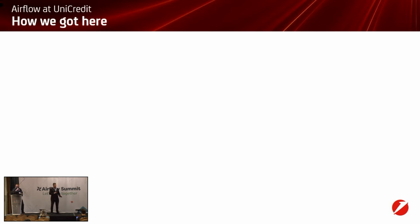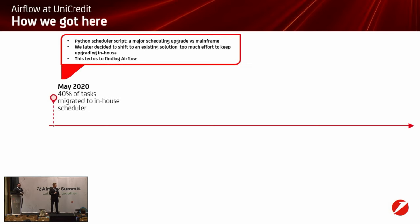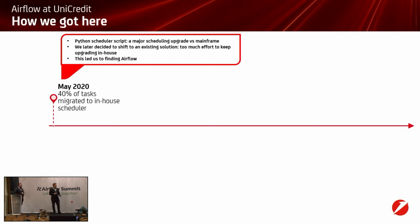We ended up moving to Airflow, and this slide presents a timeline of how we got here. The journey started in May 2020 with the deployment of a scheduler script that we created in-house in Python. This was not Airflow — something we had created ourselves. This generated a massive upgrade in terms of all the issues we had originally with the mainframe scheduler. The configuration was stored as code owned by our own team, so we could change it, scale it, do what we liked with it. We had no bottlenecks — most of the major issues were resolved. We moved 40% of our tasks to this in-house solution.